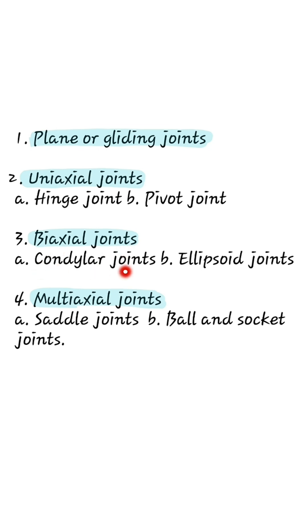Biaxial joints: condylar joints include the knee joint and right and left temporomandibular joints. Ellipsoid joints include metacarpophalangeal joints, metatarsophalangeal joints, atlanto-occipital joints, and the wrist joint.